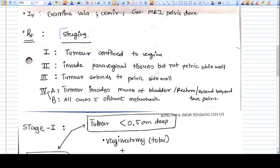Staging of vaginal carcinoma is easy. Stage one is tumor confined to vagina. Stage two means it invades the paravaginal tissue but not pelvic side wall.